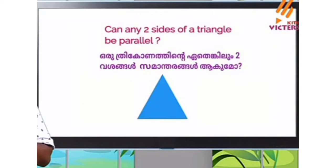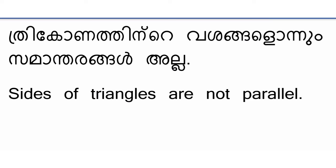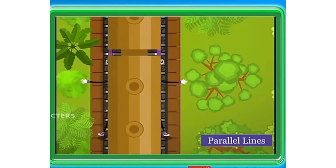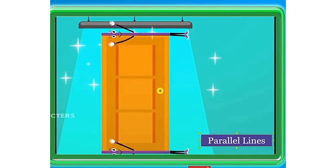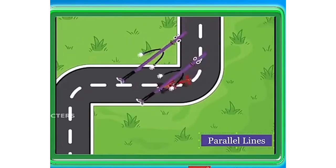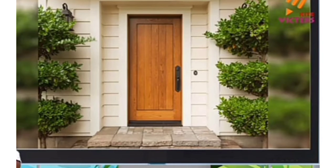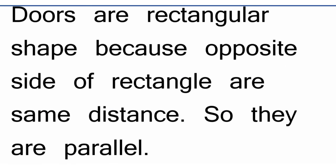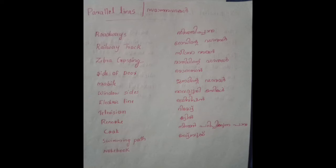Activity: Can any two sides of a triangle be parallel? If you have two sides of a triangle, we have to extend one side of the lines. There are no sides of the triangle that are parallel. The sides of the triangle are not parallel. The sides of a triangle are one side — that is parallel. The sides of the triangle are the same distance, so they are parallel. This is our example.